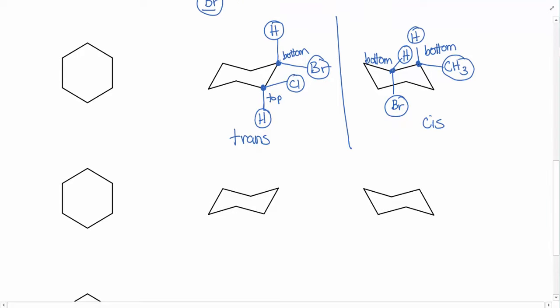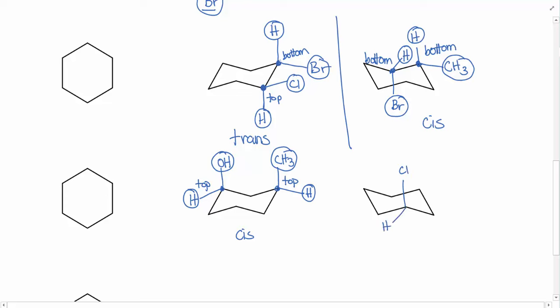Let's try a couple more. If we had an OH group (an alcohol) on one carbon and a CH3 on another: the CH3 is closer to the top than the hydrogen on its carbon, and the OH group is closer to the top than the hydrogen on its carbon, so this is cis. Now if we had a Cl going axial up on one carbon and a Br going equatorial on another: the Cl is closer to the top of the ring than the hydrogen, so that's top; while over on the Br carbon, the H is closer to the top and the Br is closer to the bottom. Since one is closer to the top and one is closer to the bottom, this is trans.